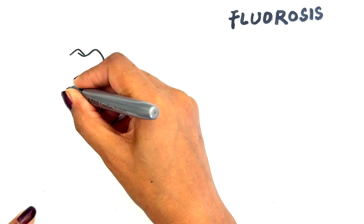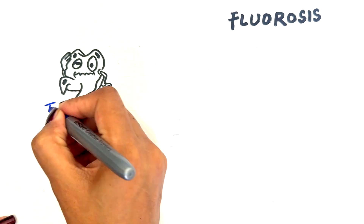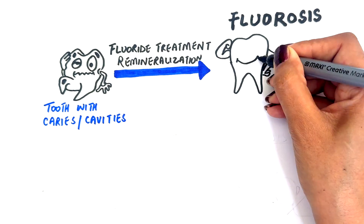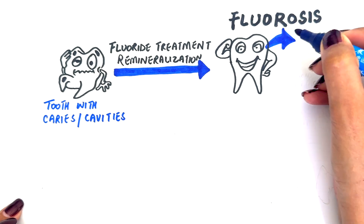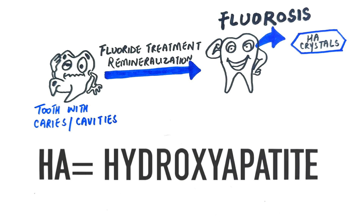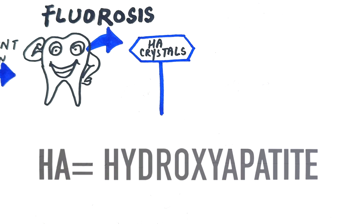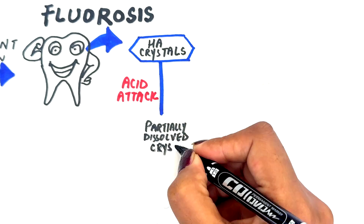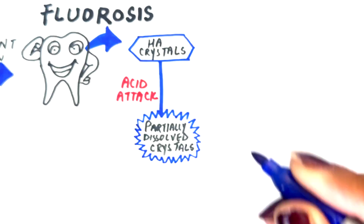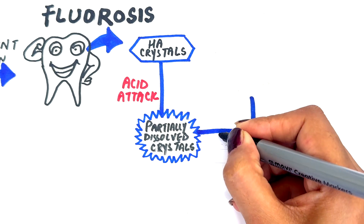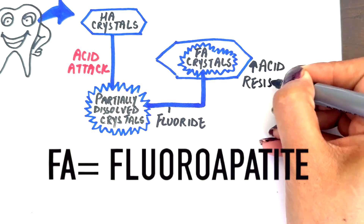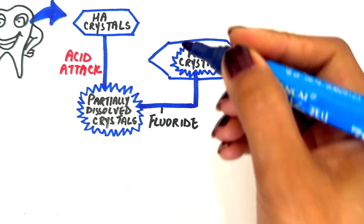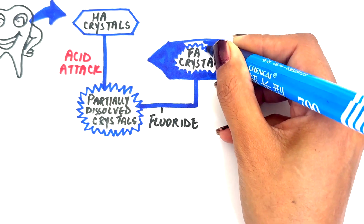For decades we have been taught that fluoride protects teeth — and that's true, but only when used in safe amounts. Our enamel is primarily made up of hydroxyapatite crystals, which can break down under acid attacks, leading to cavities. When fluoride is present, it replaces hydroxyapatite with fluoroapatite, which is a stronger, more acid-resistant mineral that helps protect against decay.